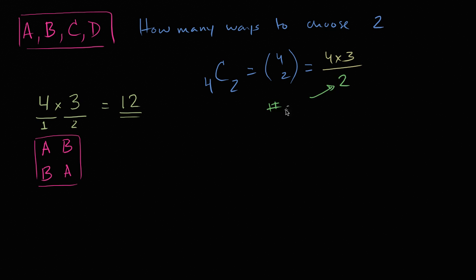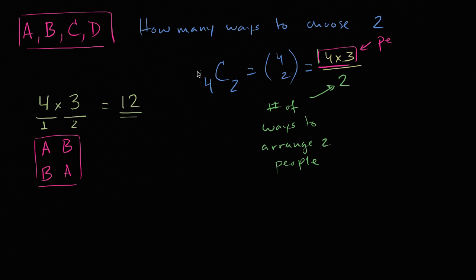So this is the number of ways to arrange two people, and the four times three up here is the permutations — the number of permutations if you take two people from a pool of four, where you care about order. The two is correcting for this double counting. You could also apply the formula directly: four choose two equals four factorial over two factorial times four minus two factorial.